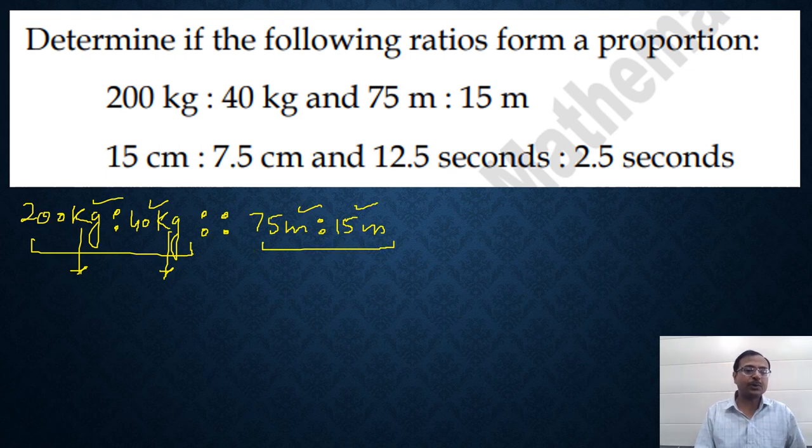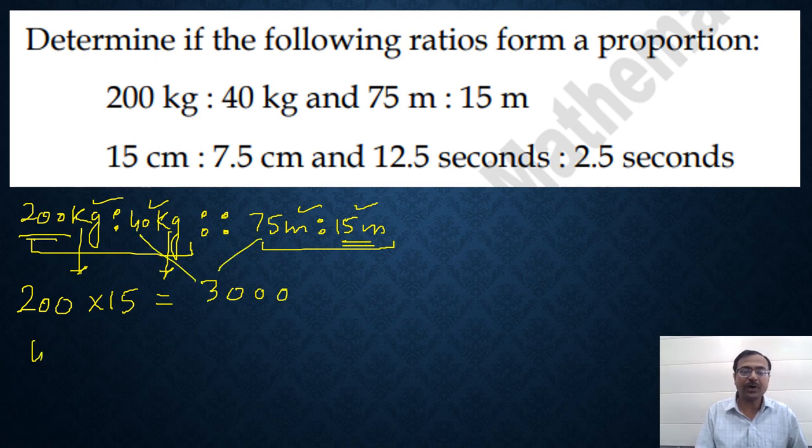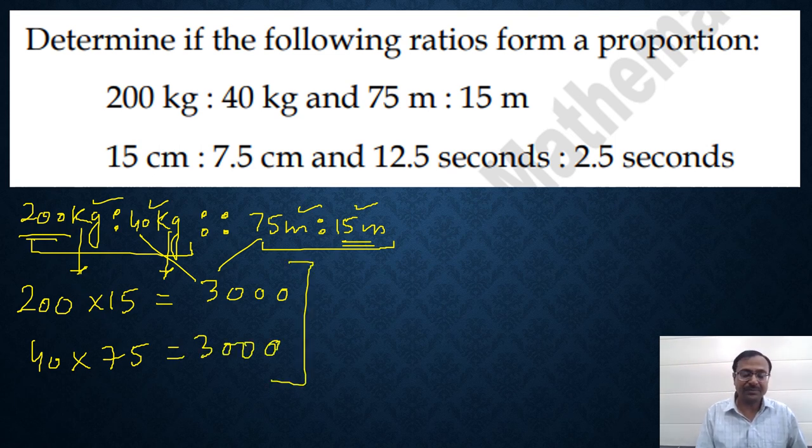Let us see whether they form a proportion or not. How about the product of extremes? 200 and then 15. The product is 2s or 30 followed by two zeros, so 3000. The product of means is 40, 75 - 15, 4s or 300 and a zero, 3000. The two products are exactly the same and therefore, yes, they form a proportion.